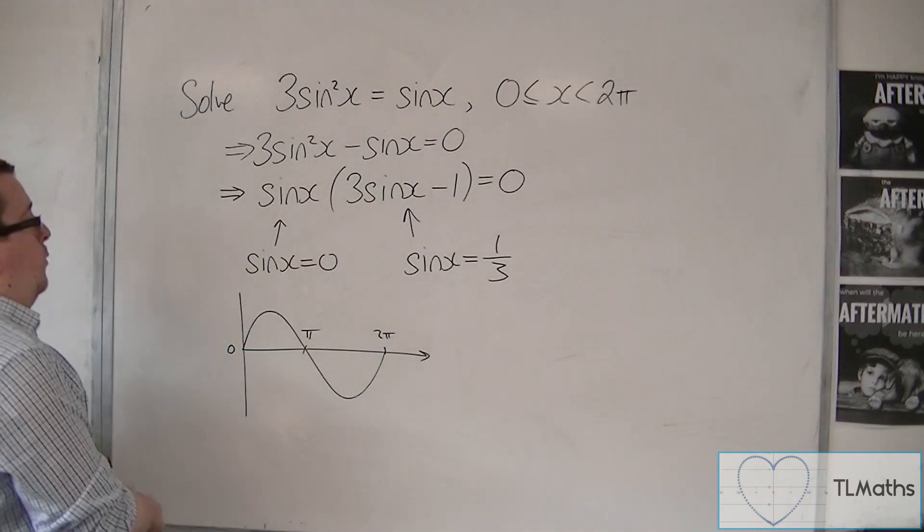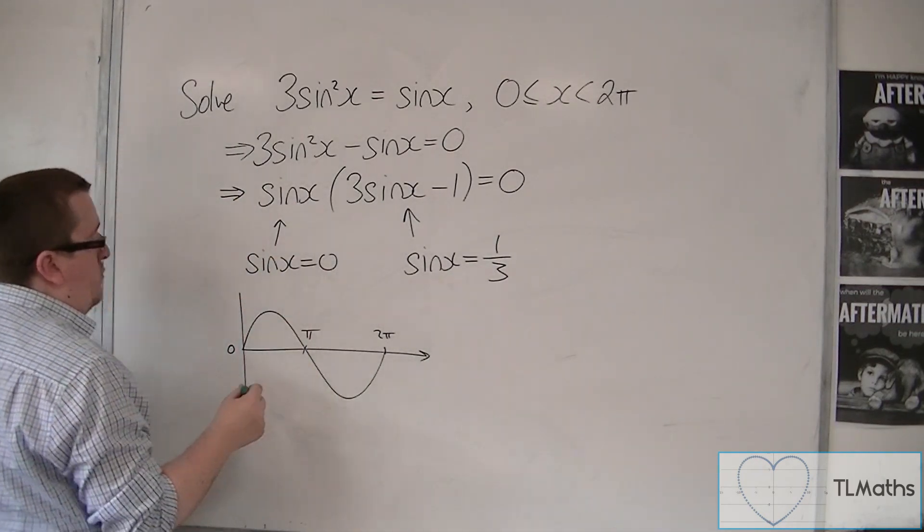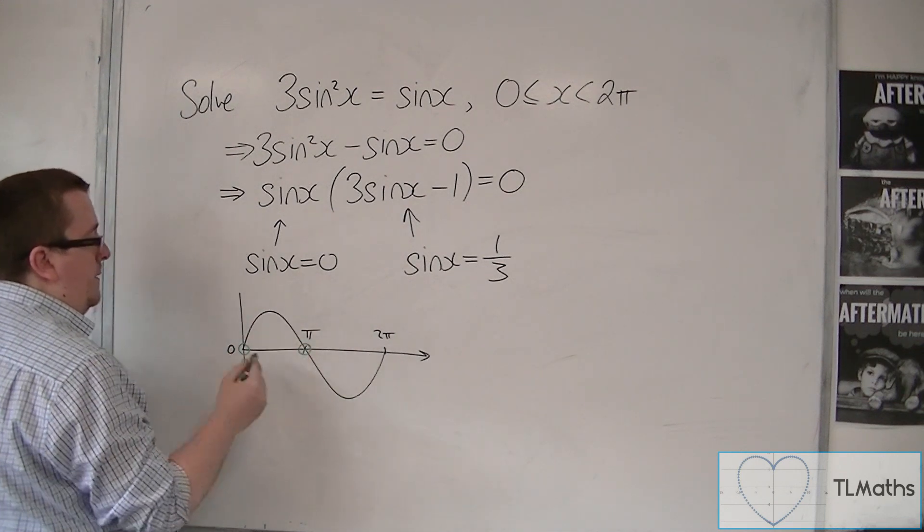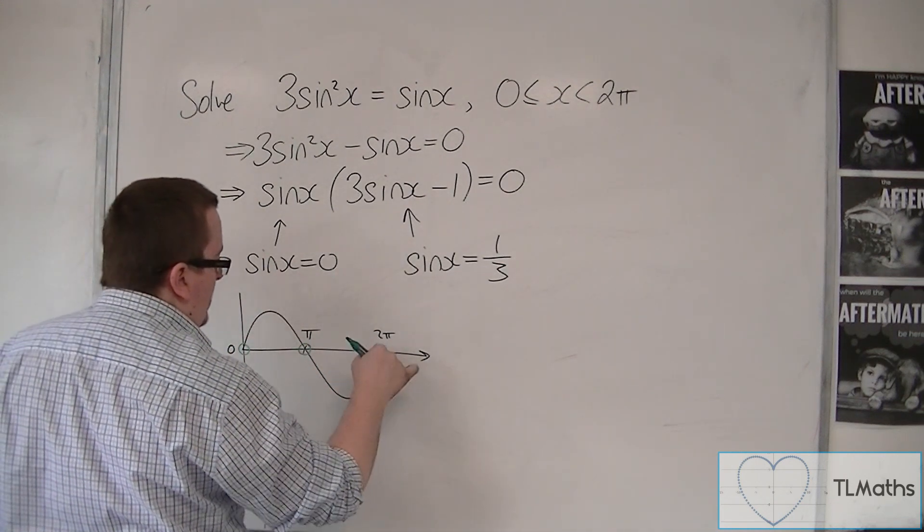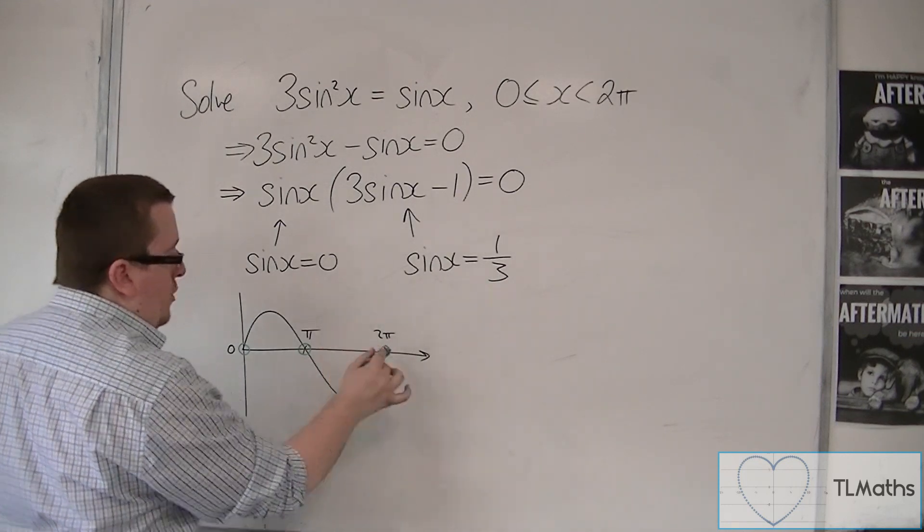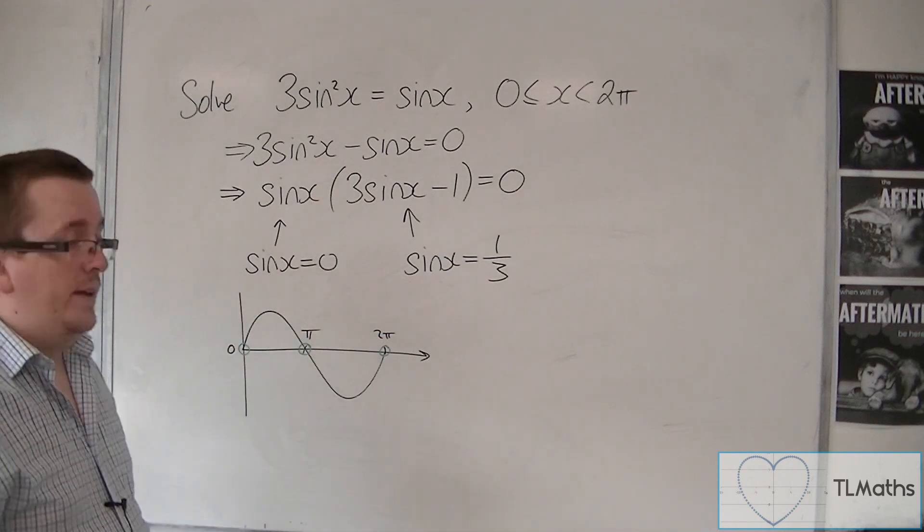So when I'm solving sine x equals 0, it is 0 at 0 and at pi, but not at 2 pi, because that is not a solution. I'll circle it, but it's not one of the solutions that we're going to have here.